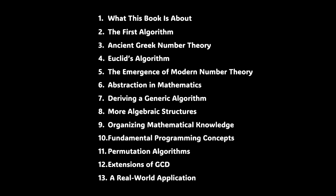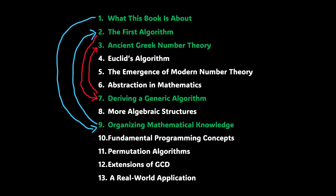This is the table of contents, and after the third meeting, this was the summary of everything we have covered so far. We left off at chapter 3, and in meeting number 4, we covered chapter 5 and chapter 13. Chapter 5 is the emergence of modern number theory, and chapter 13 is a real-world application — the RSA encryption and decryption algorithm.